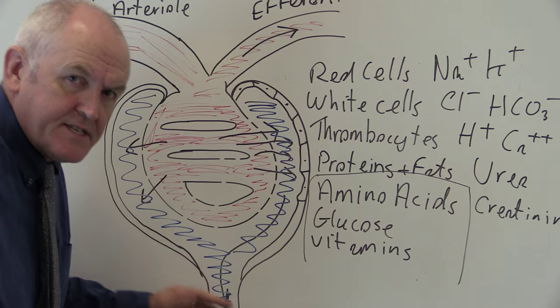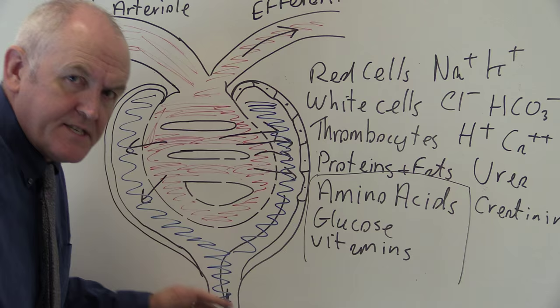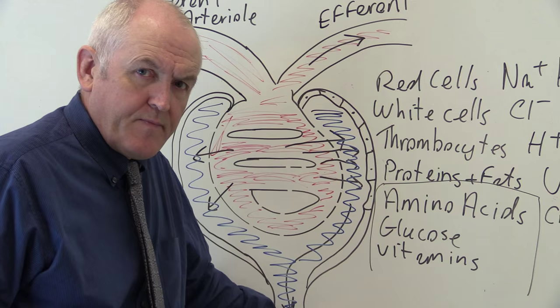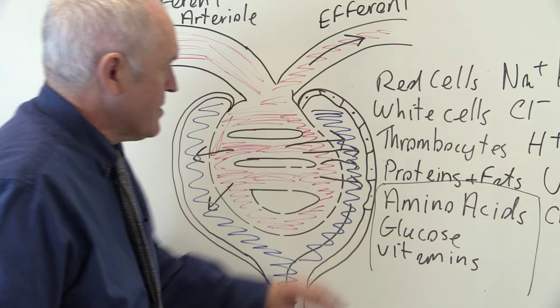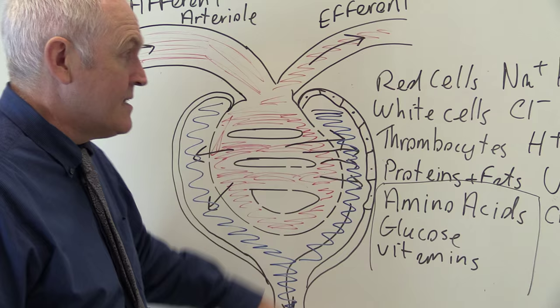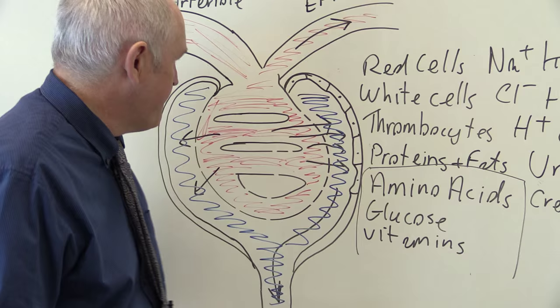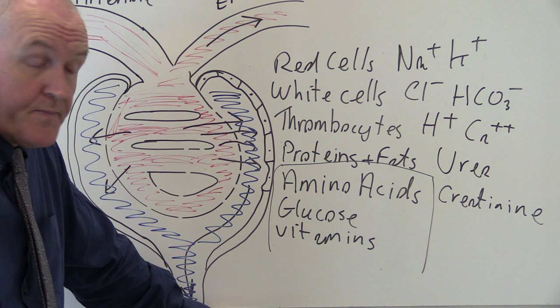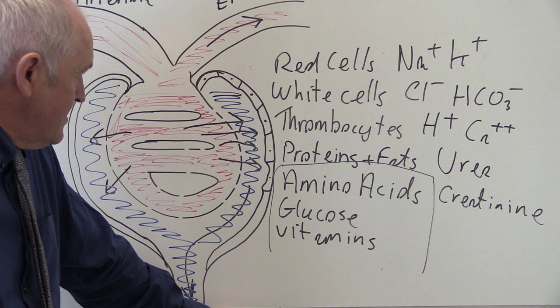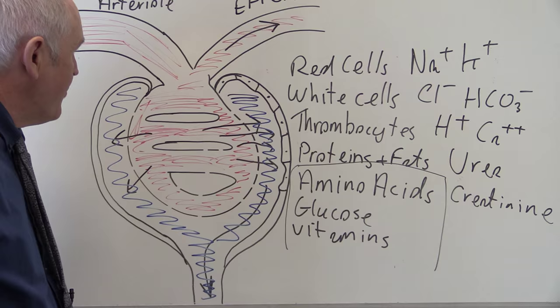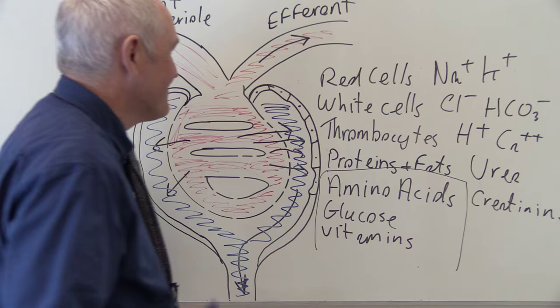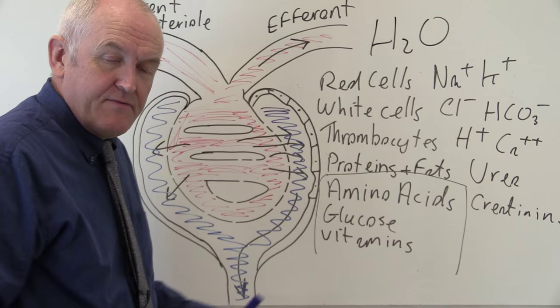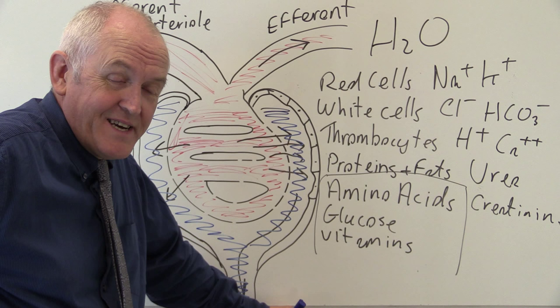So what we see is a physical sieving of the blood based on molecular size — larger molecules retained in the capillaries, smaller molecules filtered through. Retained in the blood: all the cellular components, large proteins, and fats. Freely filtered: amino acids, glucose, vitamins, sodium, potassium, chloride, bicarbonate, hydrogen, calcium ions, and waste products such as urea and creatinine. And of course, water — a small molecule freely filtered into the glomerular filtrate — to the tune of 180 liters a day, with a normal GFR of 125 milliliters per minute in a healthy young adult.